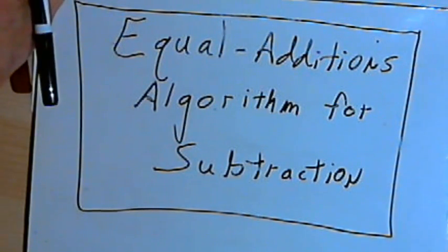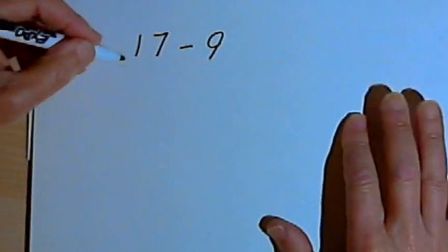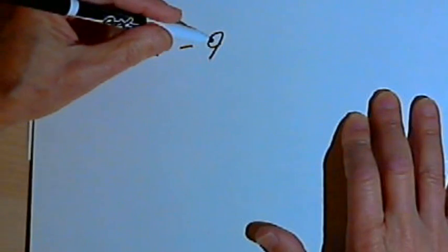So here's an example. Let's say that you had to subtract 17 minus 9. So you're finding the difference between 17 and 9.